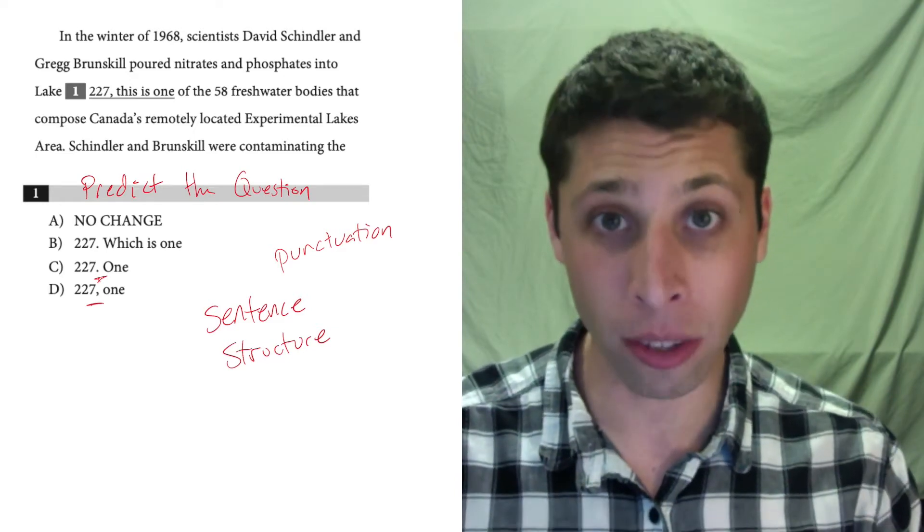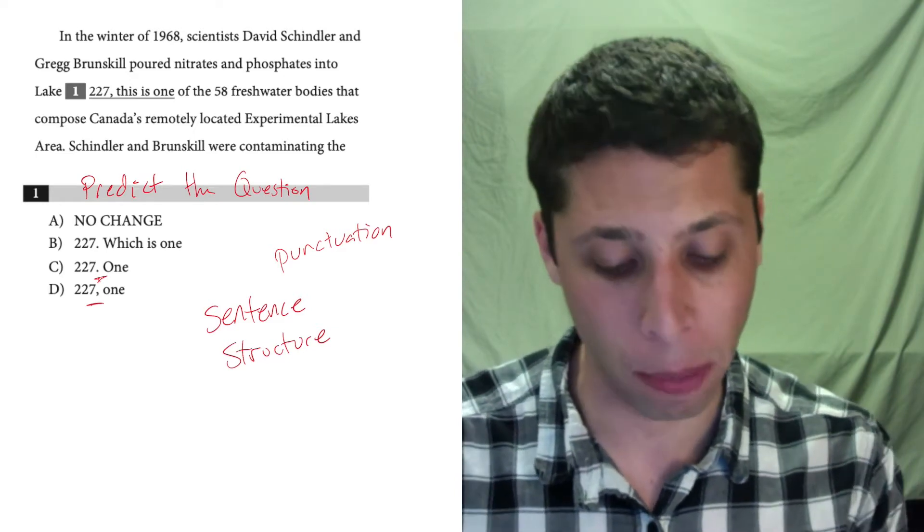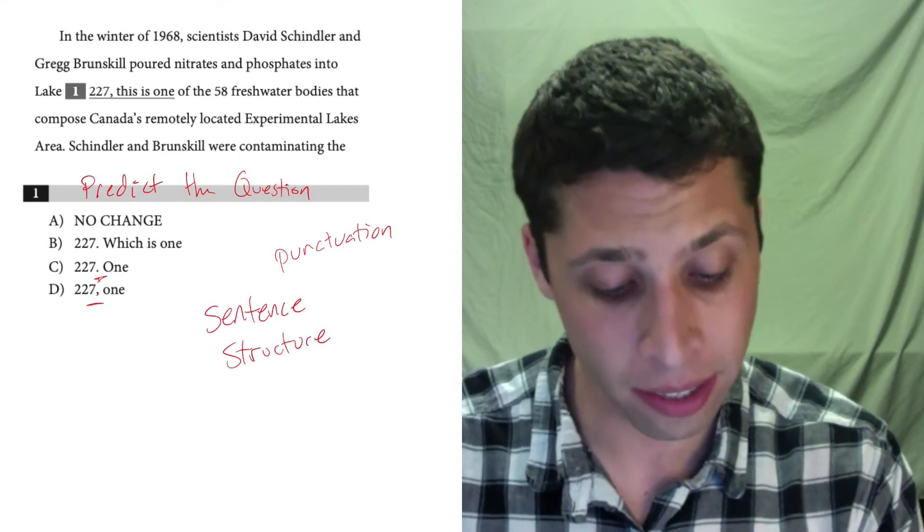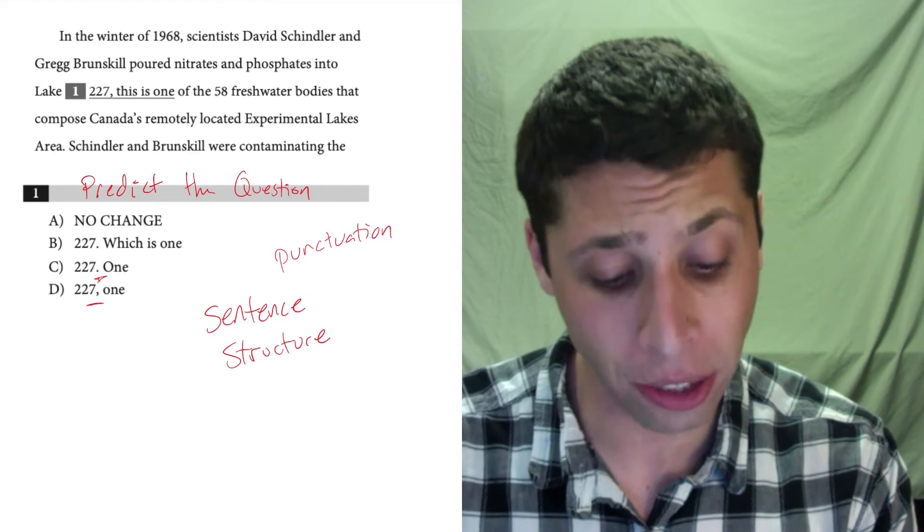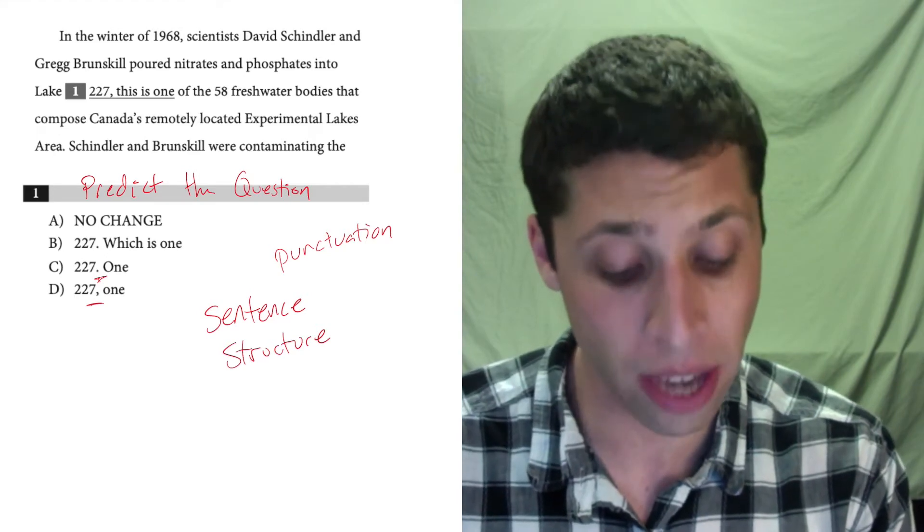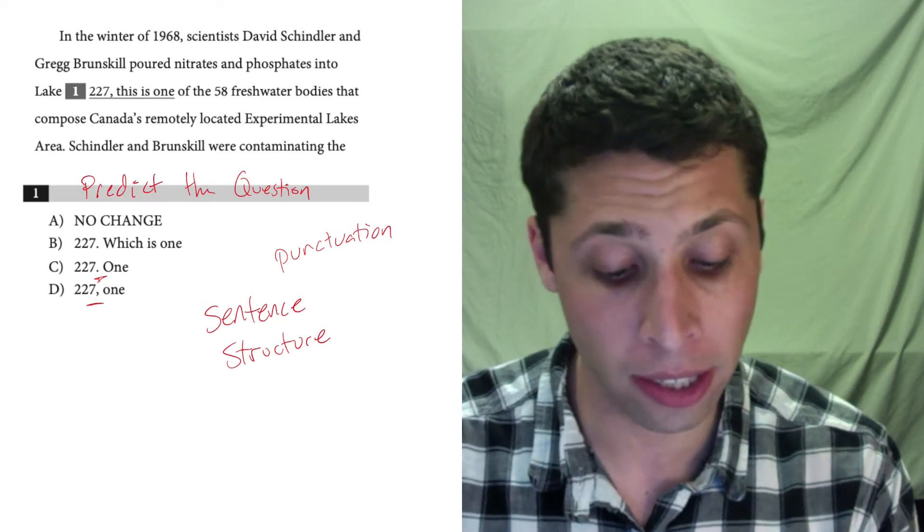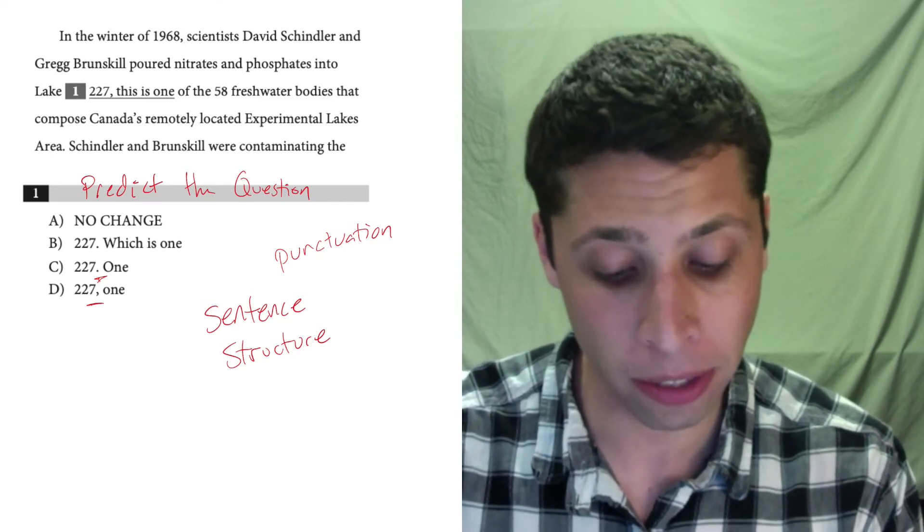So here's a perfect example. Let's read it as is with the no change option in place. In the winter of 1968, scientists David Schindler and Greg Brunskill poured nitrates and phosphates into Lake 227. This is one of the 58 freshwater bodies that composed Canada's remotely located experimental lakes area.